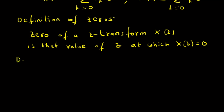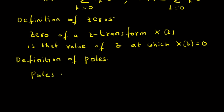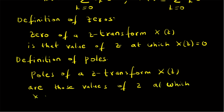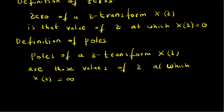Now let us look at the definition of poles. Poles of a Z transform X of Z are those values of the variable Z at which X of Z diverges, that is, X of Z equals infinity. So zeros are the values at which X of Z becomes zero, and poles are the values at which X of Z becomes infinity.